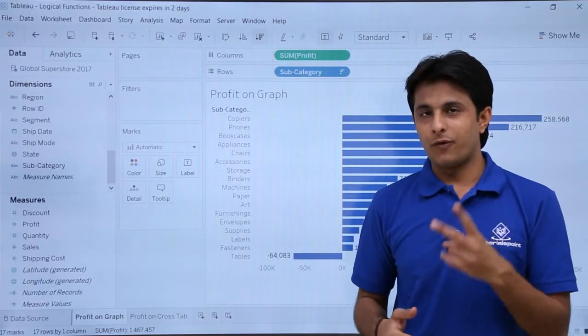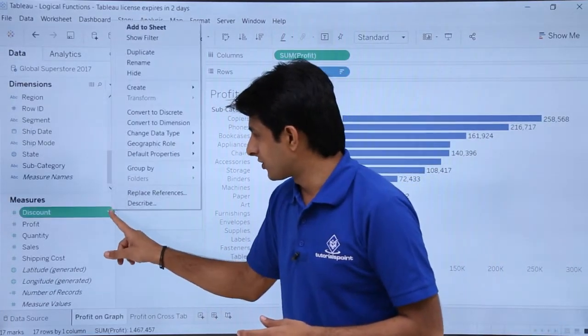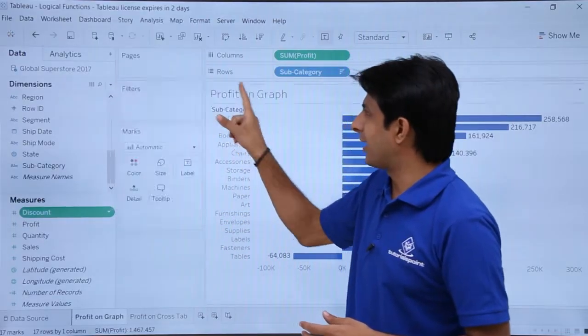So high profit, low profit, two categories I have to create it. So first of all, I'll create a field, create calculated field.